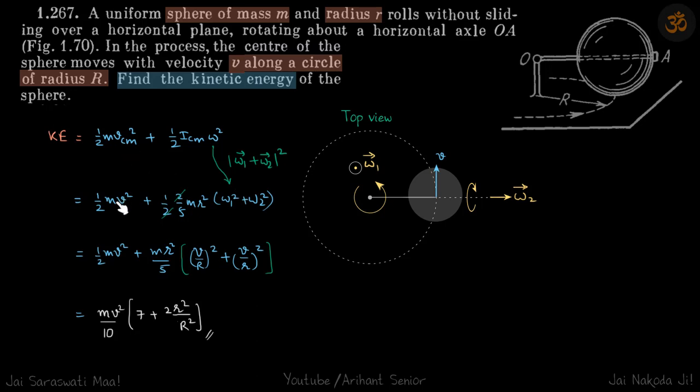So v_cm, let's take it as v, is given to us. And I_cm for a sphere is 2/5 m r².